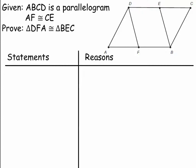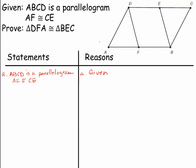I know you all dread seeing these proofs, but we've got to go through them — there are some things that we have to prove, and we need this practice of going over proofs together so you'll be better able to complete the Part 2 test. Remember, your first statement is always going to be your given. We're going to put down that ABCD is a parallelogram, and that information is given.